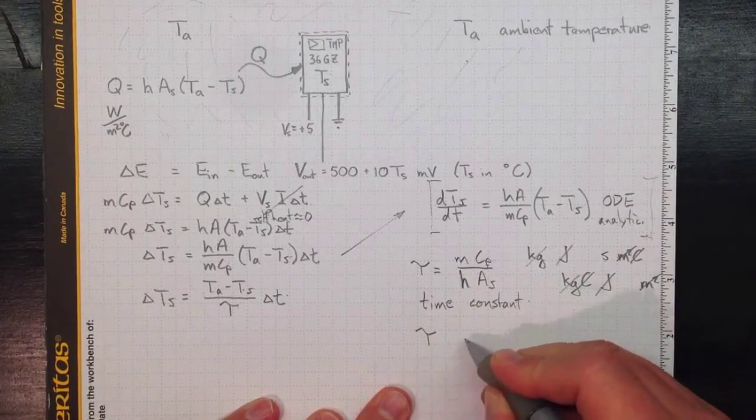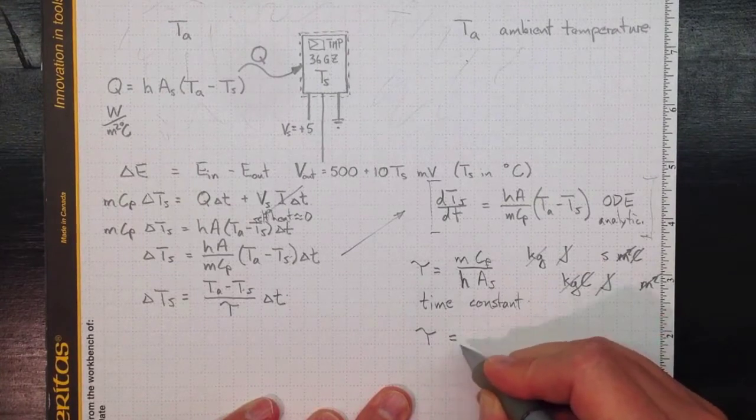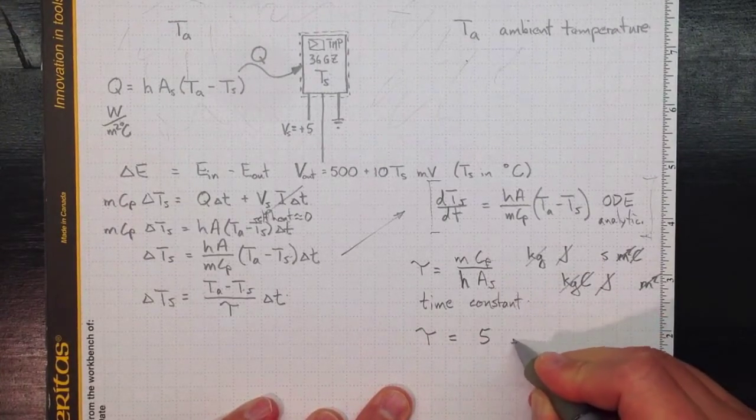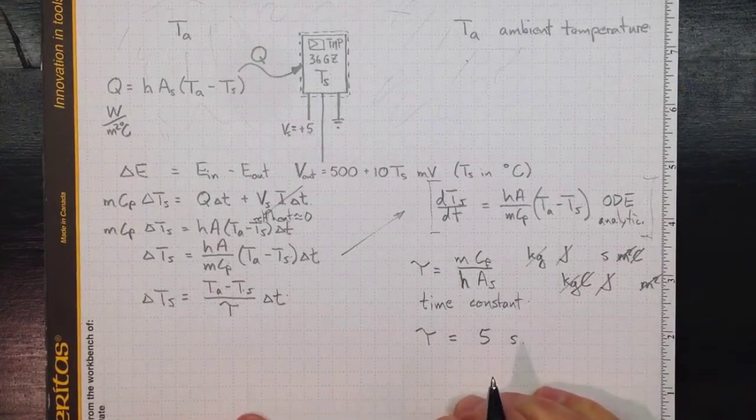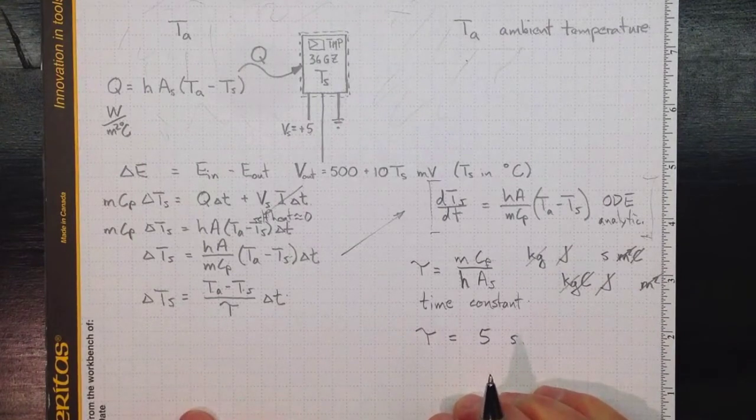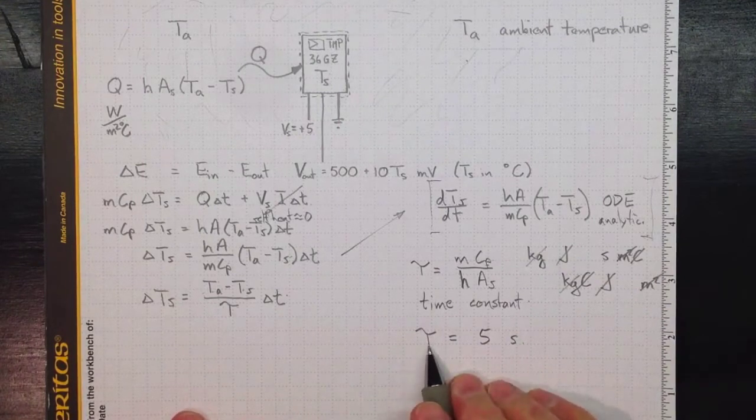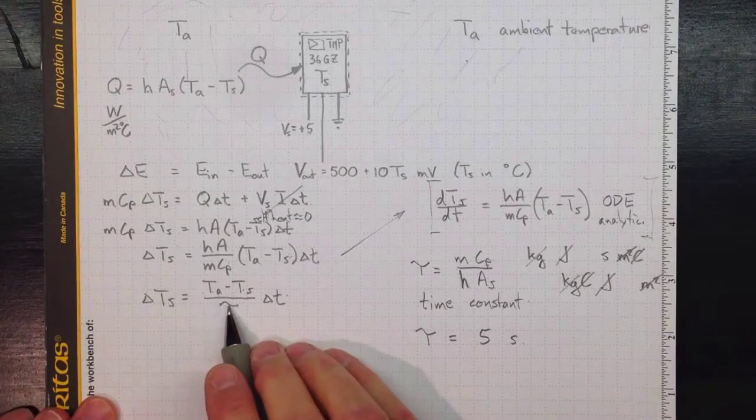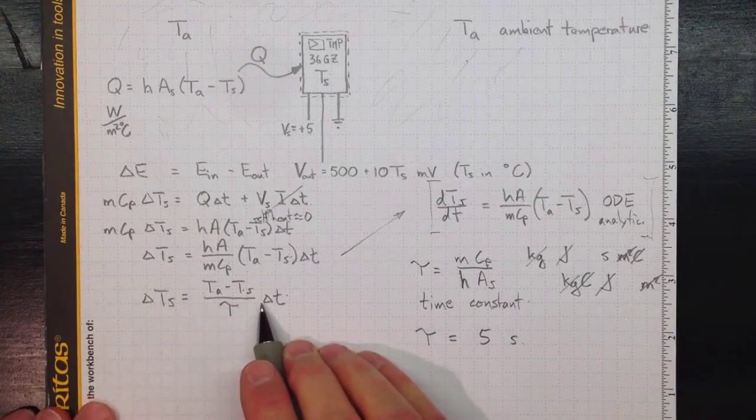So if tau was, pull a number out of a hat, five seconds, and that's a medium quick or medium slow response time constant, then we could figure out how quickly this temperature would change.